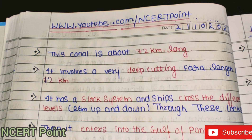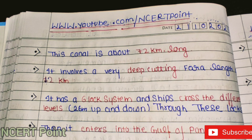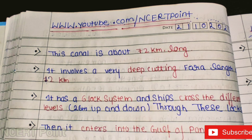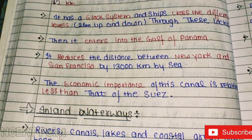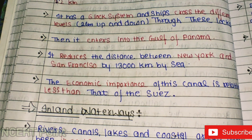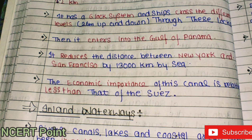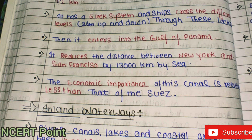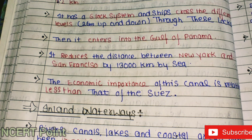The Panama Canal involves very deep cutting for a length of 12 km. It has a 6-lock system, and ships cross different levels — 26 meters up and down — through these locks, then entering the Gulf of Panama. It reduces the sea route distance between New York and San Francisco by 13,000 km. Its economic importance is relatively less than that of the Suez Canal.